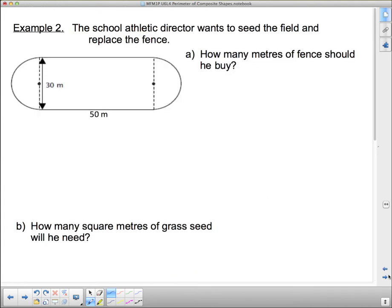Okay, what's our next one? The school athletic director wants to seed the field and replace the fence. So here's the field, there's a fence all the way around it, and we want to put seed on it. How many meters of fence should he buy? Well, let's figure out, is fence something that we want area or perimeter on? If we're talking about a fence, we're talking about the distance around. So we want to go around here, there's where we're going to put our fence. So that is perimeter.